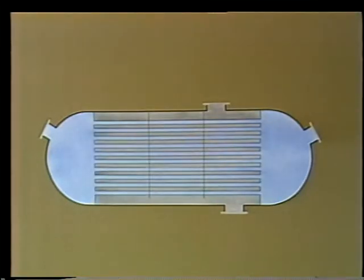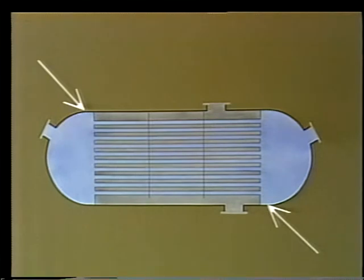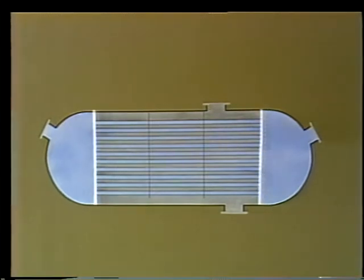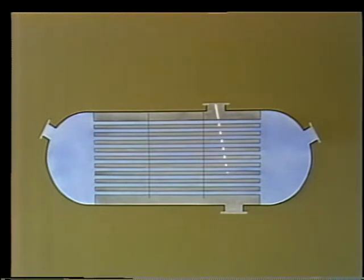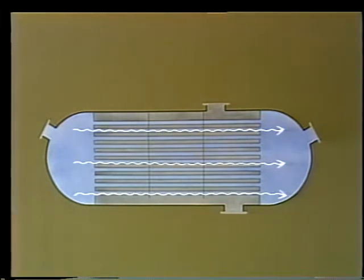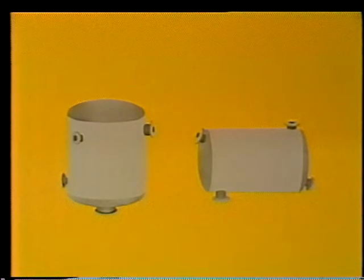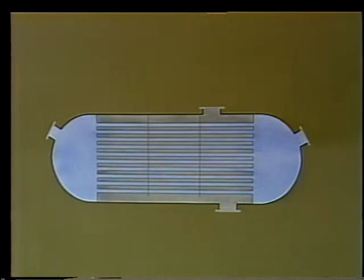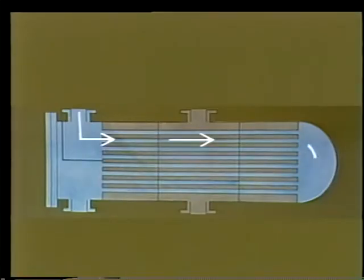Shell and tube heat exchangers are similar to condensers in many ways. The shell is the main body of the heat exchanger and holds the tubes and tube supports. The tube sheets isolate the water box and support the tube bundle at its ends. When we refer to the shell side, we mean the area within the shell and around the outside of the tubes. When we talk about the tube side, we're referring to what goes through the inside of the tubes. Shell and tube heat exchangers come in many different styles depending on the purpose for which they're designed. They may have either a vertical or a horizontal shell, and they may be single pass or multi-pass.